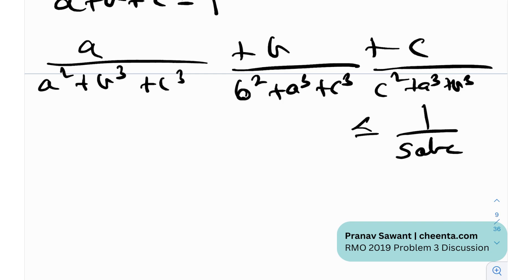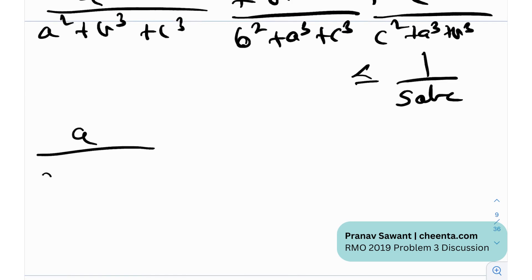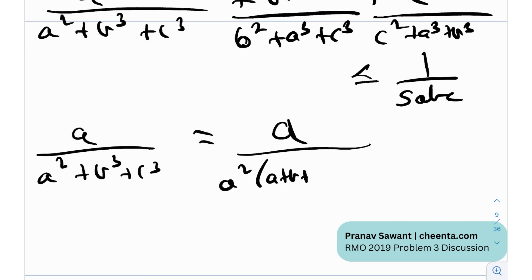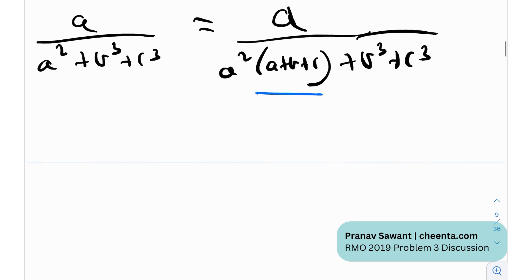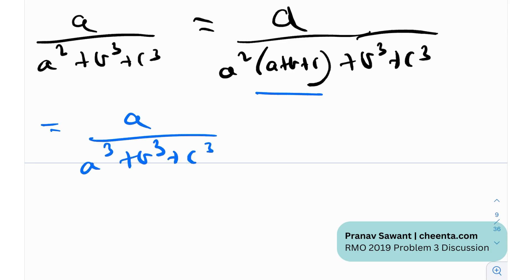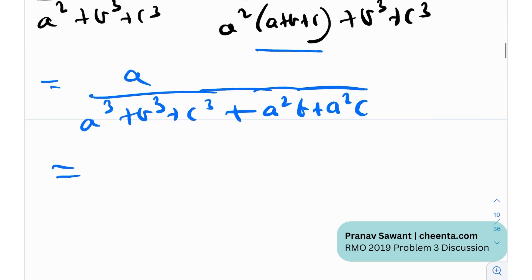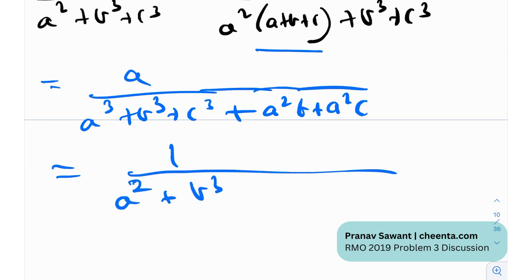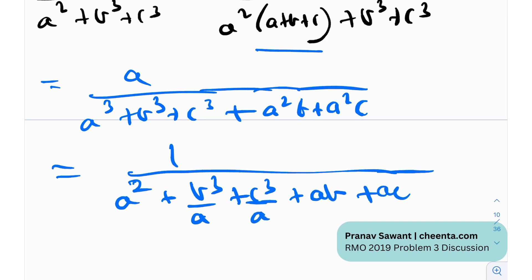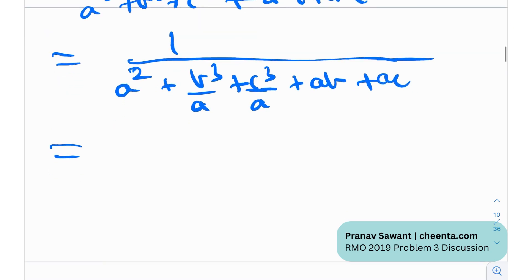Let's see what we can do. I can write a/(a² + b³ + c³) = a / [a²(a + b + c) + b³ + c³]. Since a + b + c = 1, both sides are equal — I just multiplied by 1, so it makes no difference. This equals a / (a³ + b³ + c³ + a²b + a²c). Dividing numerator and denominator by a gives: 1 / (a² + b³/a + c³/a + ab + ac).